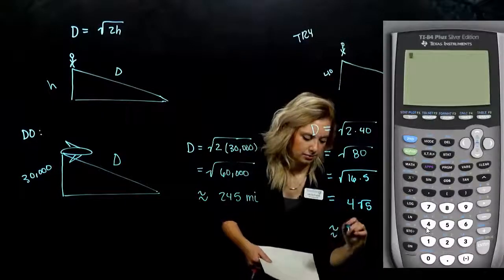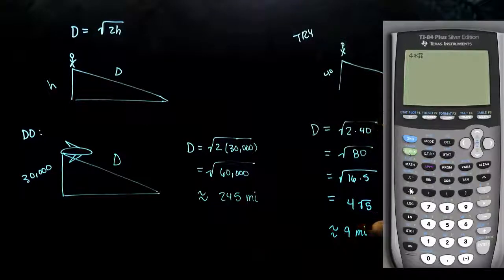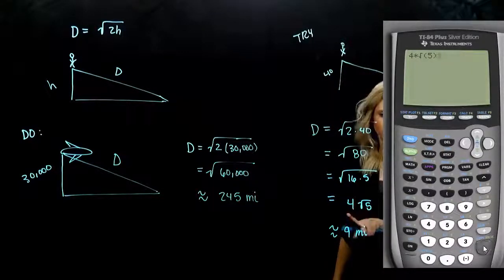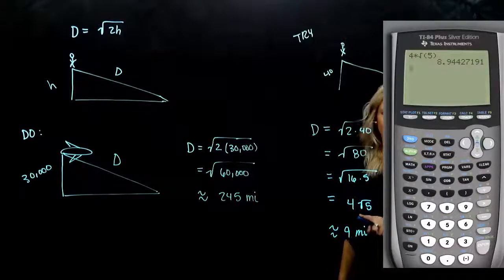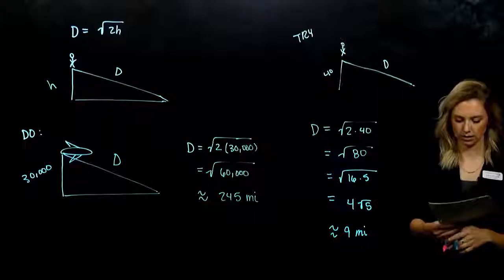But we don't talk like that in regular life. So if we approximate it, it is around 9 miles that he can see from that crow's nest. And again, we use the calculator to approximate. 4 times square root of 5. Hit enter. And we can round if needed. So now let's look at a few if I have the distance and I'm trying to figure out how high up in the air the thing or person is.